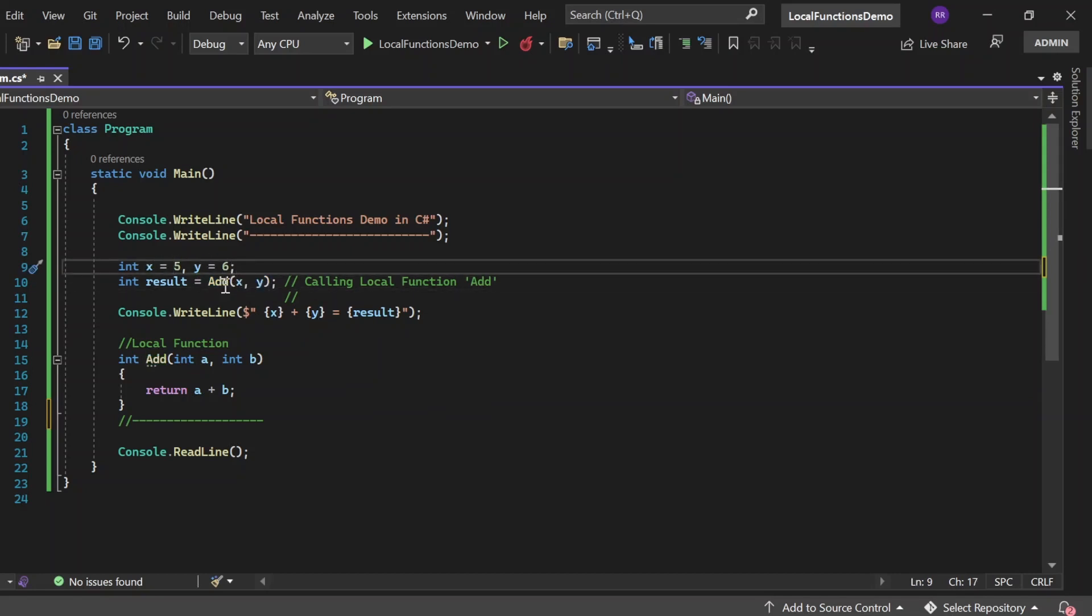In this statement I'm calling this local function Add, passing the values of x and y, 5 and 6, into this Add function which is the local function. We're invoking the local function from here. Once it's invoked and gives the output, we store it in the result variable.